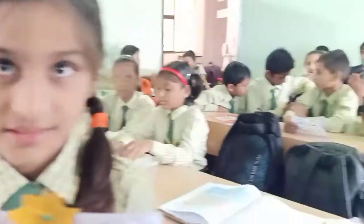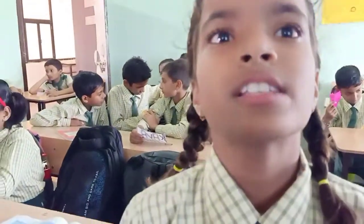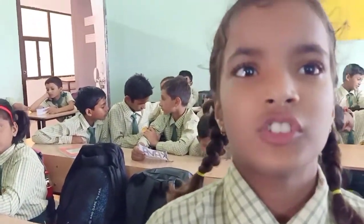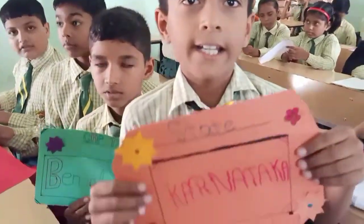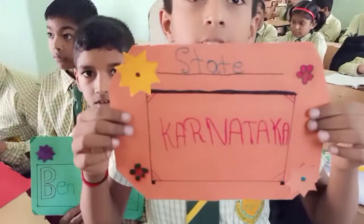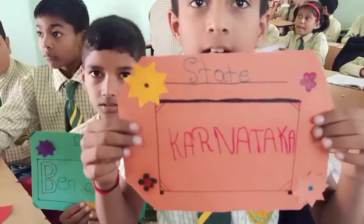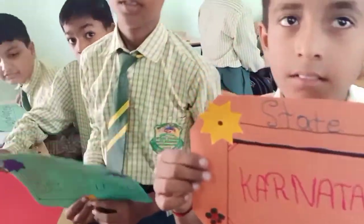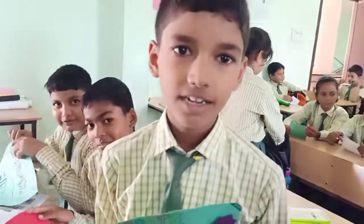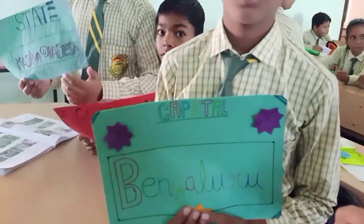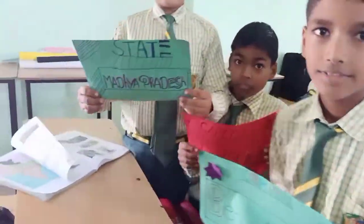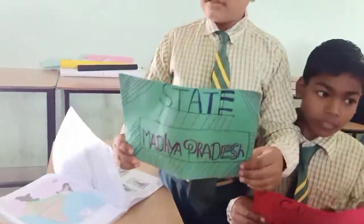The state name is Jharkhand and the capital of Jharkhand is Ranchi. The next state name is Karnataka and the capital of Karnataka is Bengaluru.